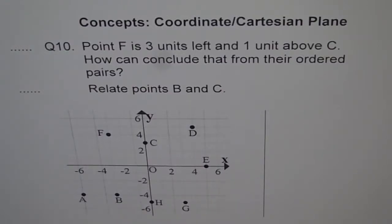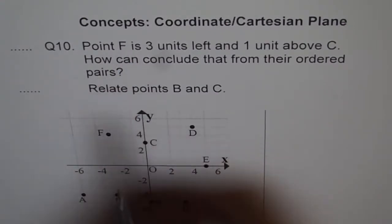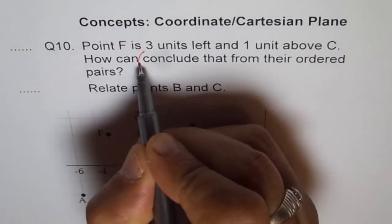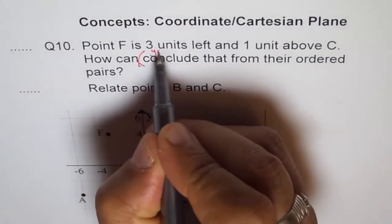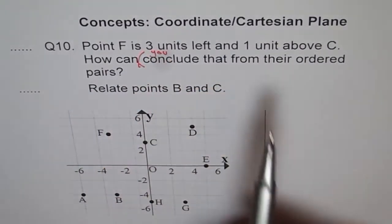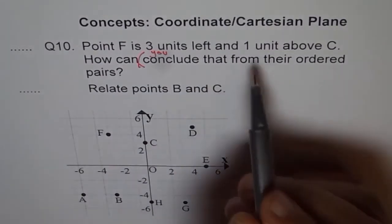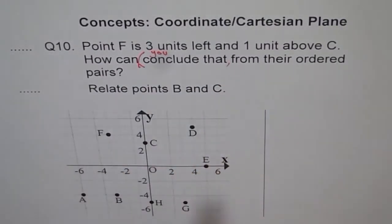Question 10. Point F is 3 units left and 1 unit above C. How can you conclude that from their ordered pair?